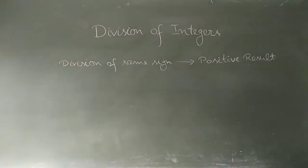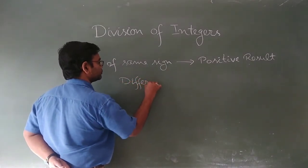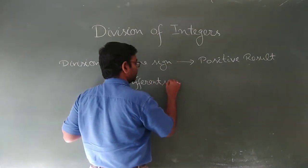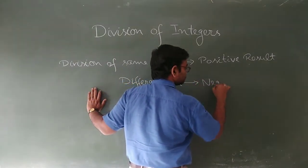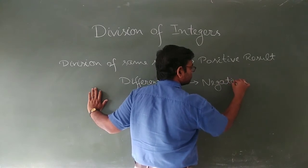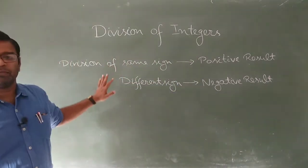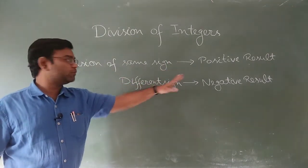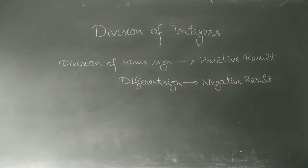And if division involves different sign integers, it gives you a negative result. This is the same as multiplication rules: division of same sign integers gives a positive result, and division of different sign integers gives a negative result. Now let's move to some properties.